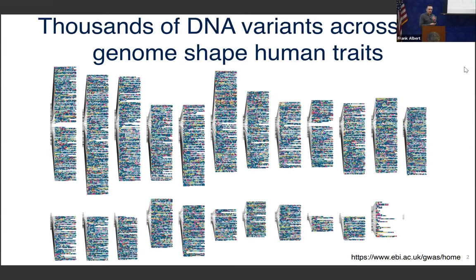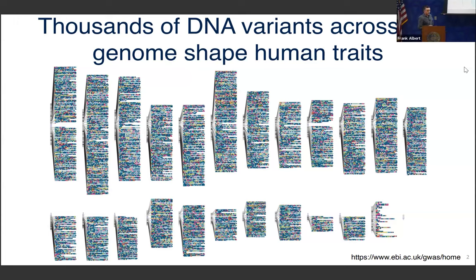The overall theme for the lab is that we're really fascinated with natural genetic variation. Every trait that you can imagine and measure and see in the world around you differs among individuals in the species. By way of illustration, here is the latest overview of human genome-wide association study results from two days ago. You're looking at the human chromosomes, and each dot is an association between a genetic variant — a DNA difference between human individuals — that is associated with a given trait of interest. Different traits are colored in different colors.